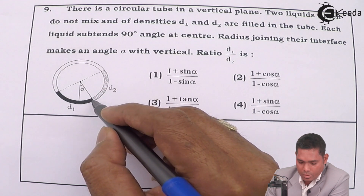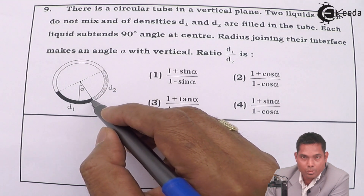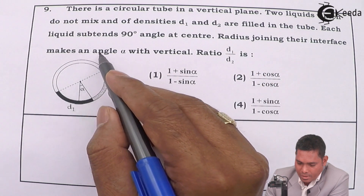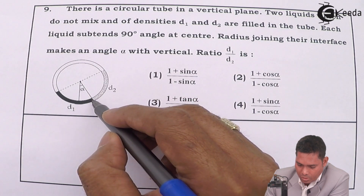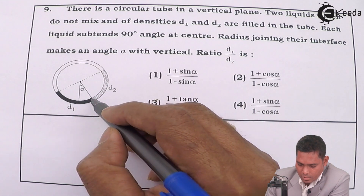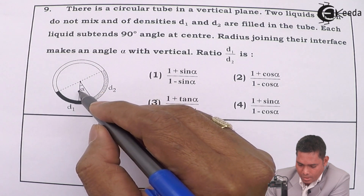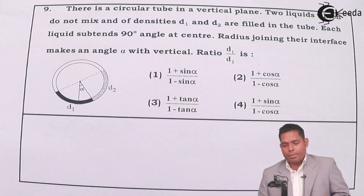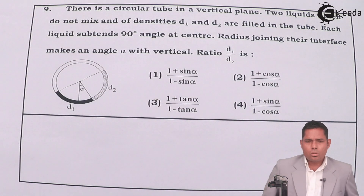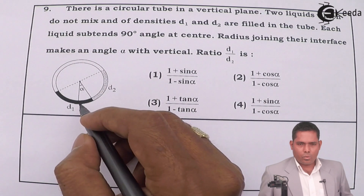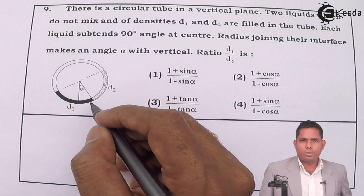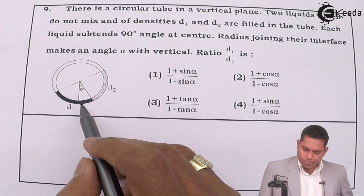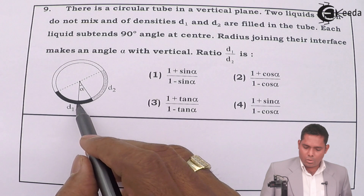The interface is the face which separates the two media. The radius joining their interface makes an angle of alpha with the vertical. We need to find the ratio d1 by d2. To get the ratio of densities, I have to write down the pressure formula — the pressure at the zero level from both sides must be the same.